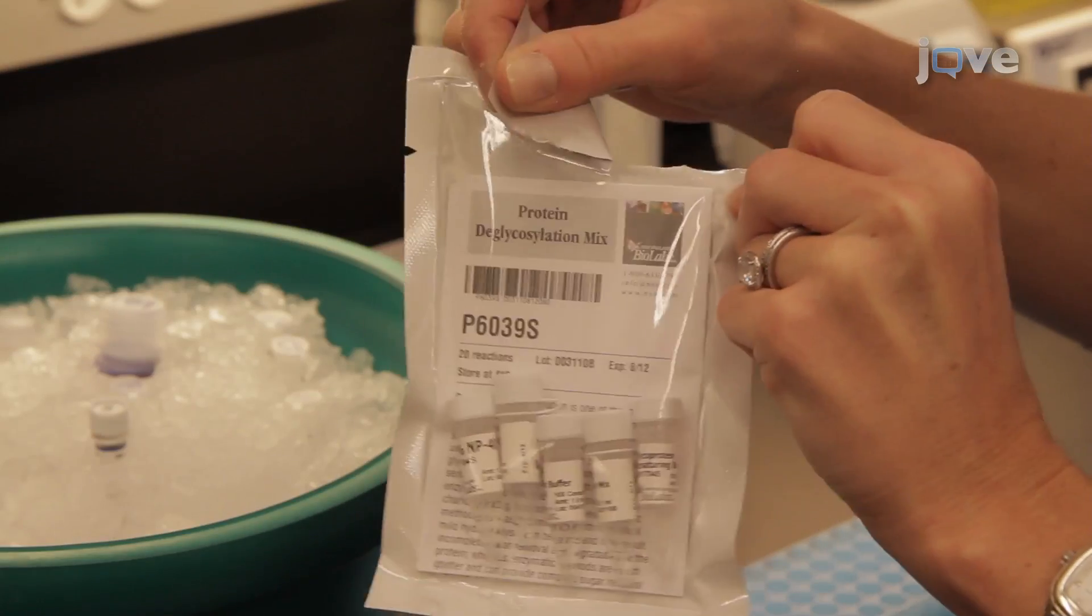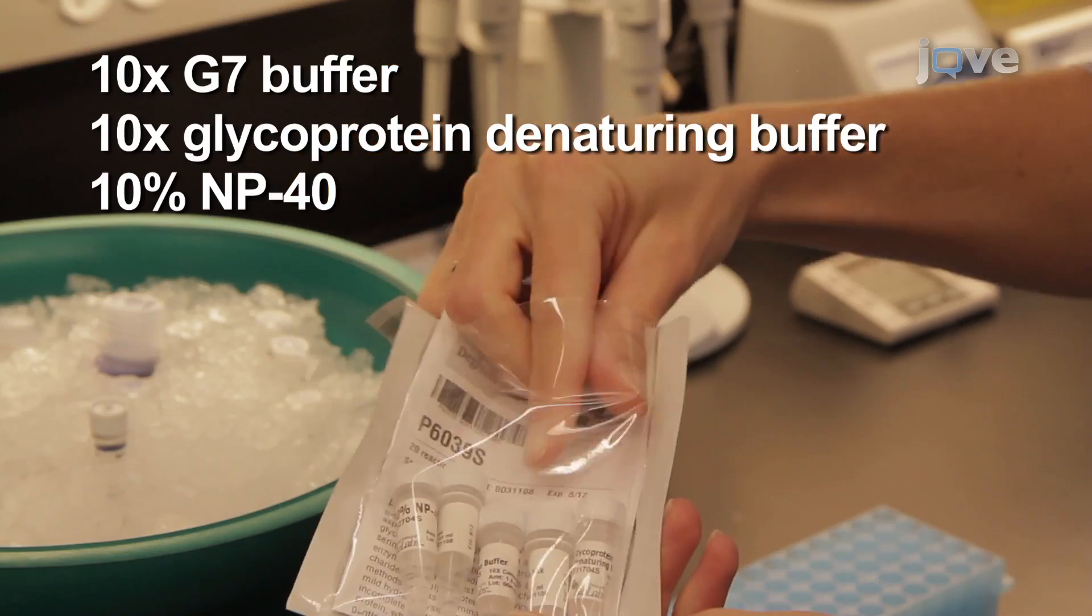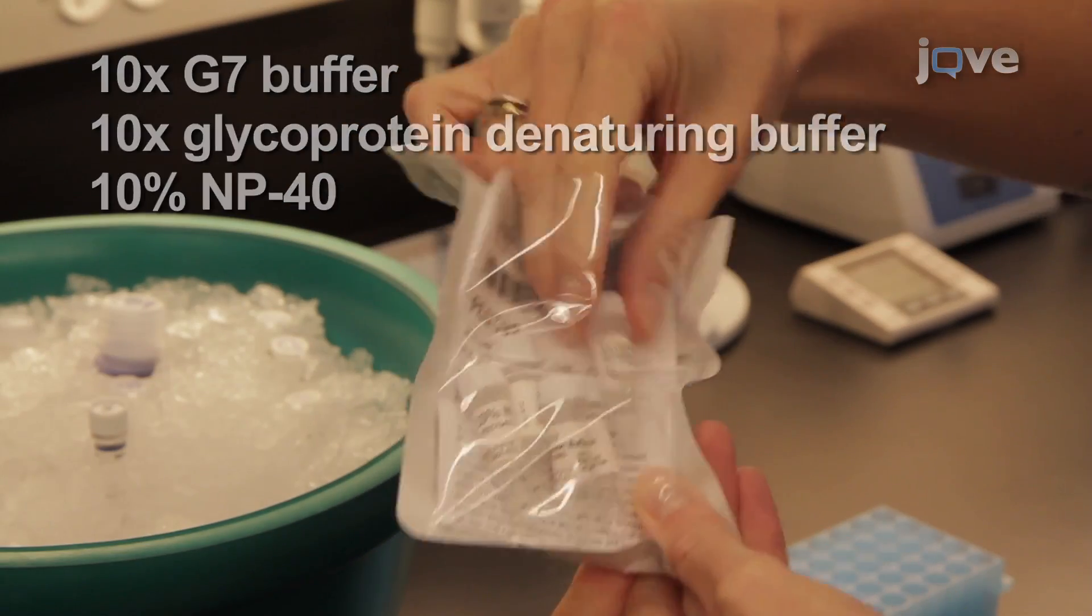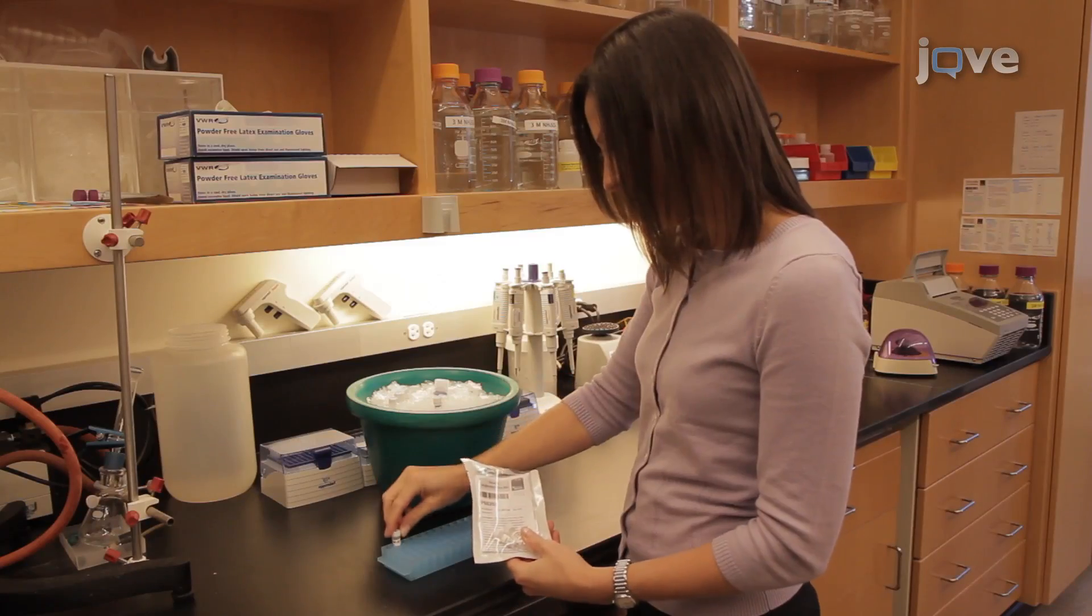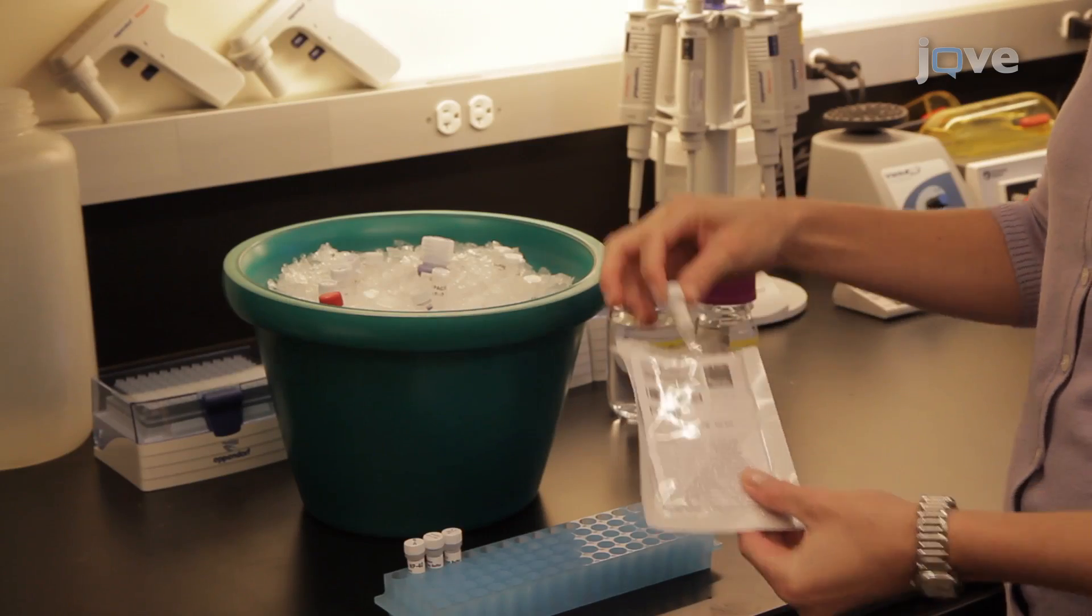To begin enzymatic deglycosylation, thaw the supplied buffers from the protein deglycosylation kit. Mix the tubes thoroughly and keep at room temperature. Place the enzyme-containing vials on ice.